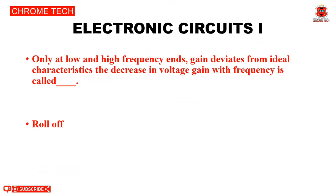Next question: Gain deviates from ideal characteristics only at low and high frequencies. The decrease in voltage gain with frequency is called dash. The answer is roll-off.